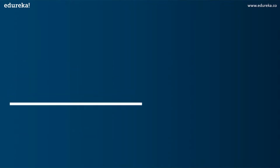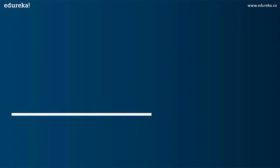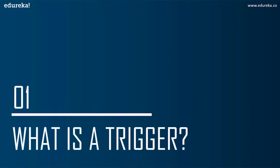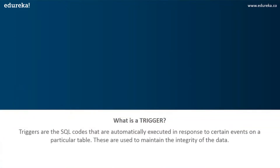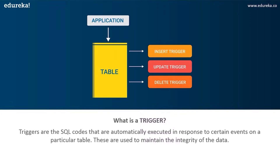The first topic in today's discussion is: what are triggers? Triggers are SQL code that are automatically executed in response to certain events on a particular table. They are used to maintain the integrity of the data in a given table. A trigger in SQL works similar to a real-world trigger.